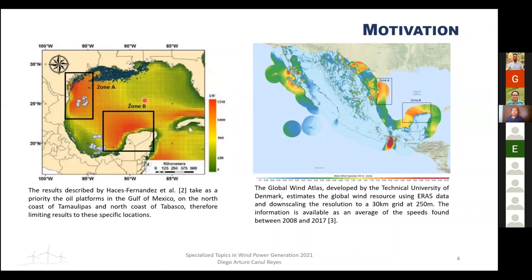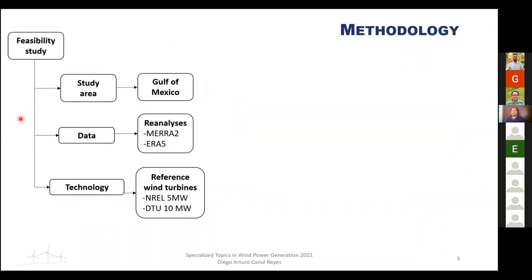For the methodology, ERA5 and MERRA-2 reanalysis datasets were used to obtain wind resource information. This was then evaluated using two reference wind turbines: the 5 MW from NREL and the 10 MW from DTU. Potential zones were delimited using GIS, and then specific potential points were proposed for a seasonal capacity factor analysis.